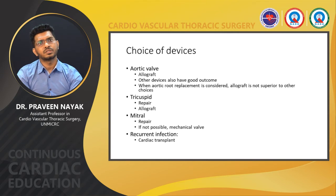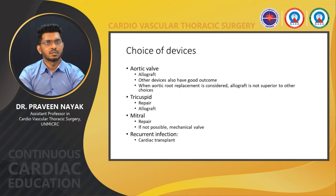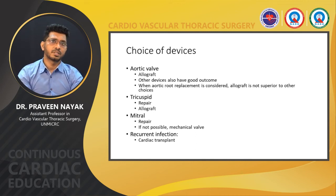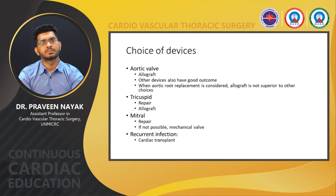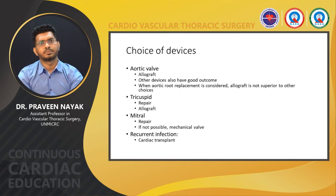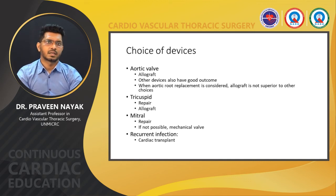Regarding choice of devices: for aortic valve replacement, allograft is the first choice, though other cardiac devices also have good outcomes. If aortic root replacement is considered, allograft is notably superior to other choices. For tricuspid valve infective endocarditis, repair is attempted first; if it fails or is not possible, an allograft can be used. For mitral valve, repair is attempted first; if not possible, a mechanical valve can be used. In case of recurrent infection, cardiac transplant can be considered.